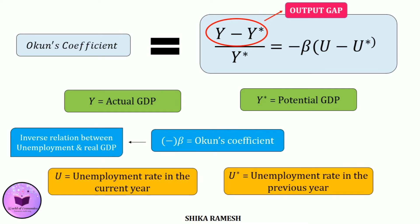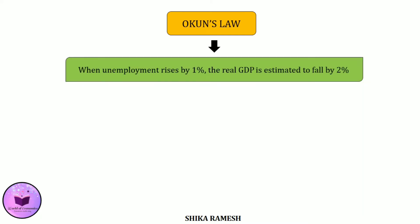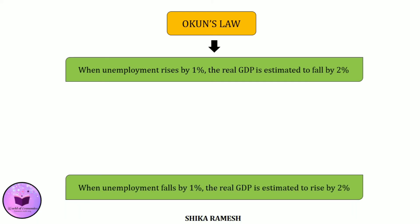The negative sign in front of beta represents the inverse relationship between unemployment and real GDP. Okun's Law shows a statistical relation between unemployment and GDP, and the law states that when unemployment rises by 1%, the real GDP is estimated to fall by 2%. Or it can be stated the other way around — that is, when unemployment falls by 1%, the real GDP is estimated to rise by 2%.